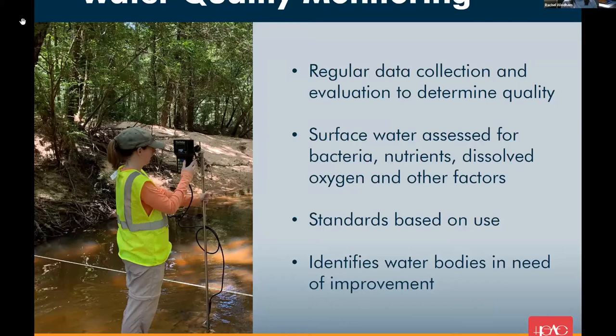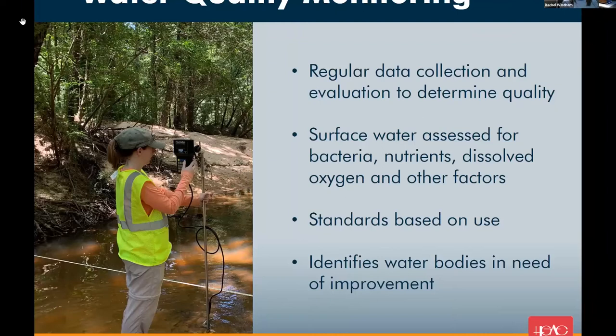Once we have water quality samples, we compare the concentrations of each parameter to state water quality standards, which are based on whatever the water body is being used for — different criteria apply to different uses. For example, for contact recreation — any time you're swimming or wading in the water — there's a specific criterion for fecal indicator bacteria that can't be exceeded, otherwise that water body is deemed unsafe. By comparing samples to standards based on different uses, we can identify which water bodies throughout our region need improvement.